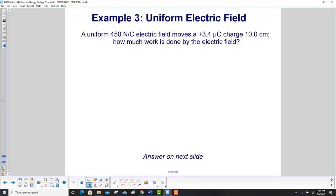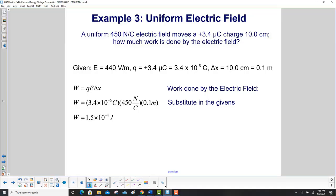A uniform 450 newton per coulomb electric field moves a plus 3.4 micro coulomb charge 10 centimeters. How much work is done by the electric field? We start with some unit conversions. 3.4 micro coulombs is 3.4 times 10 to the minus 6 coulombs and 10 centimeters is 0.1 meter. You move the decimal over two places to the left. The work done by the electric field is qE delta x. Here's our q, here's the electric field, here's the displacement, and we get the work is 1.5 times 10 to the minus 4th joules.